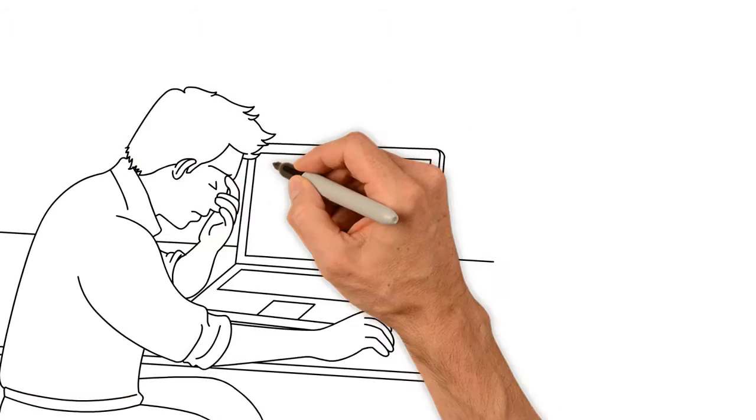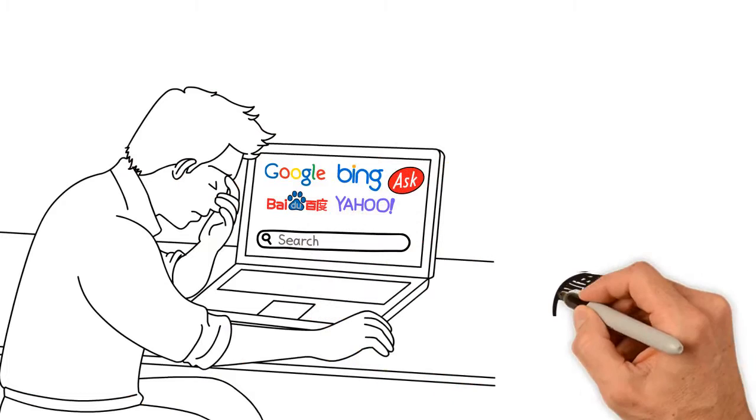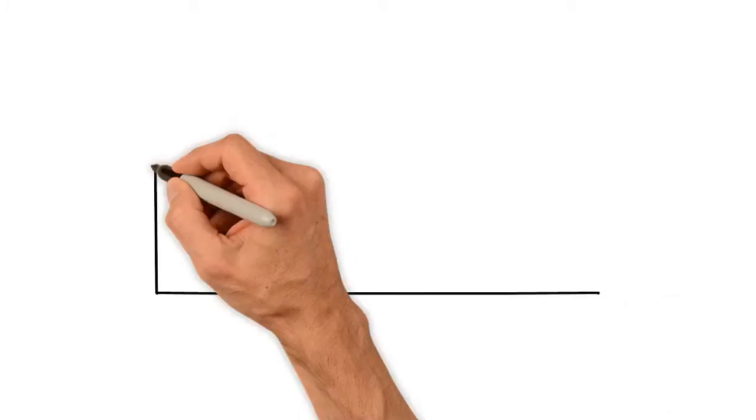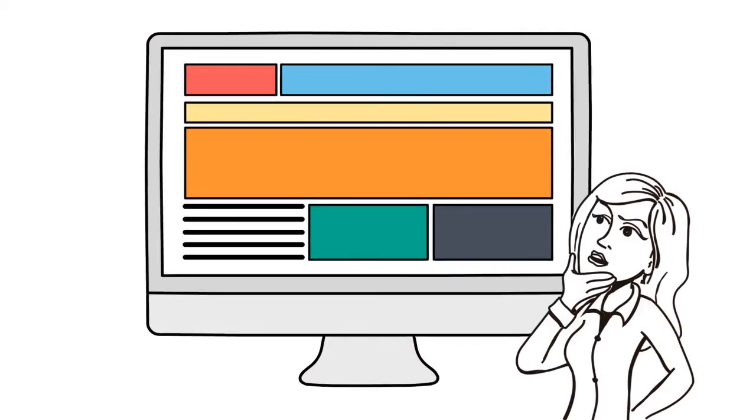It is difficult to find accurate information online. Search engines direct us to different websites on a similar subject. Websites have too much content and make it confusing to find the exact data.